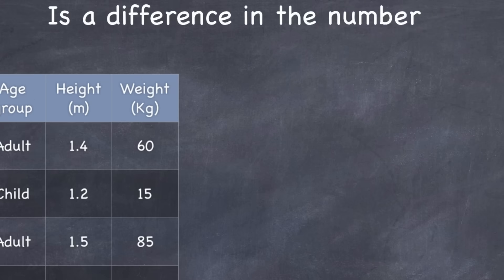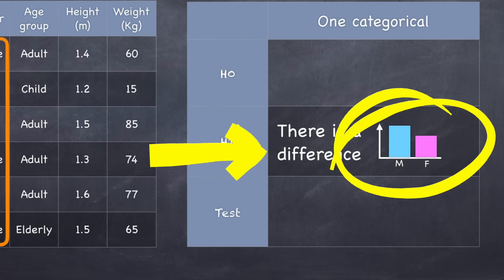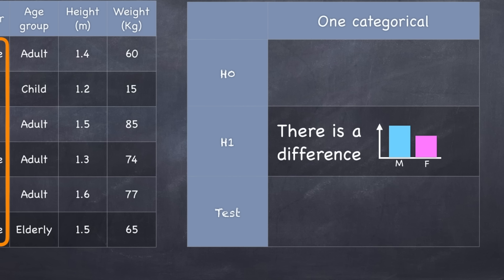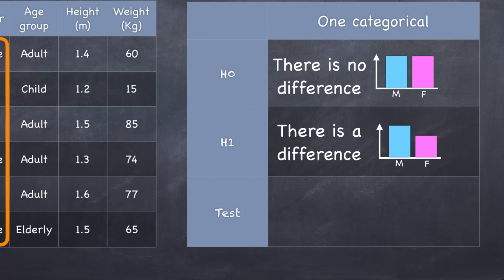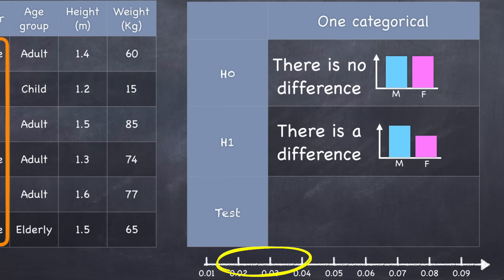We might ask: is there a difference in the number of men and women in the population? We state the hypothesis that there is a difference, and when we look at our sample data, we do see a difference in the proportion of men and women. But we shouldn't get excited yet — this is just sample data. We could, by chance, have selected a sample that just happened to show a difference. So let's consider the possibility that there is actually no difference in the number of men and women in the population. That's our null hypothesis. If that were true, what is the probability that we would see the difference we have observed, or a greater difference? If we can show that probability is low, we can have confidence that the null hypothesis is wrong and reject it.